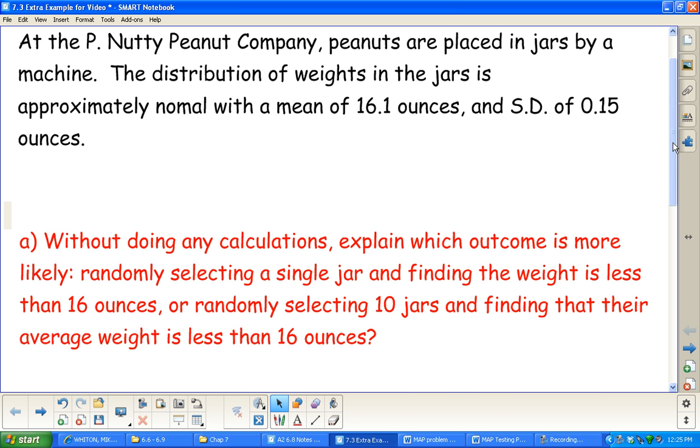It should say normal there, with a mean of 16.1 and standard deviation of 0.15. So we basically know, if you want to think about this before we get going, normal distribution, these are the weights, average of 16.1 for each jar.